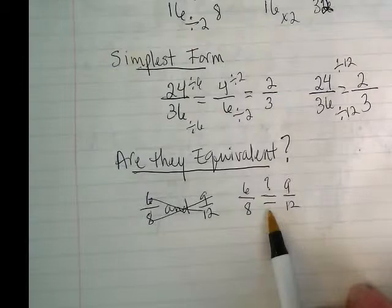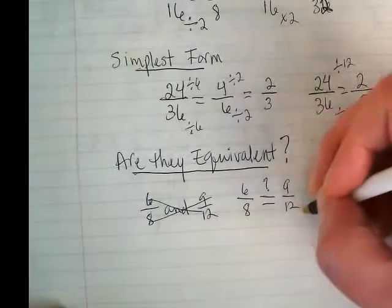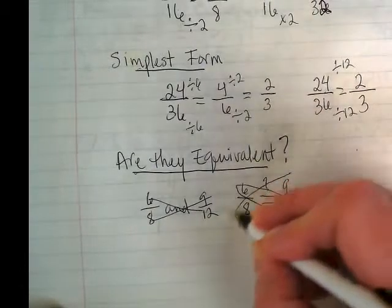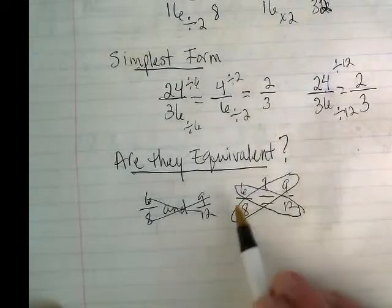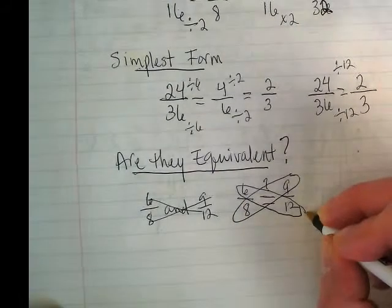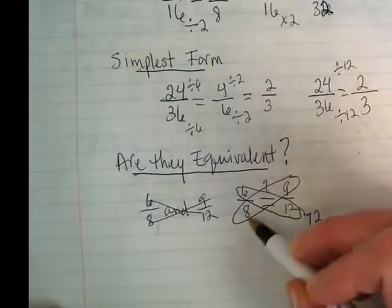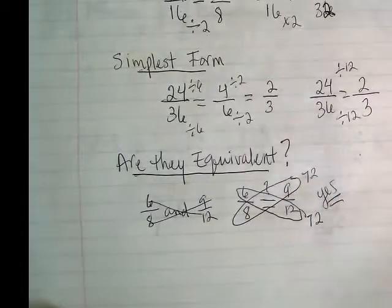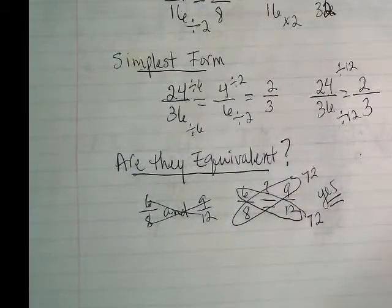Now there's a couple of ways to check this, but I'm going to show you guys my favorite, because it's going to get us ready for math we're going to do a lot in seventh grade. It's called cross-multiplying. And if I cross-multiply these two, if they both come out to the same number, then they are equivalent. What is 6 times 12? And what's 8 times 9? So the answer is yes. So they both have to be the same number? When I cross-multiply, if I get the same number, they are equivalent.